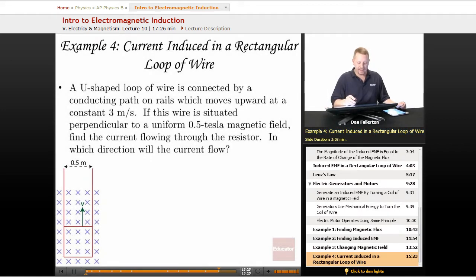Looking at the current induced in a rectangular loop of wire, we have a U-shaped loop of wire which is connected by a conducting path on rails which moves upward at a constant 3 meters per second. So this piece is moving up at 3 meters per second. If the wire is situated perpendicular to a uniform half tesla magnetic field, find the current flowing through the resistor. In which direction will the current flow?